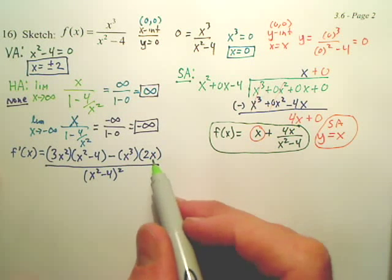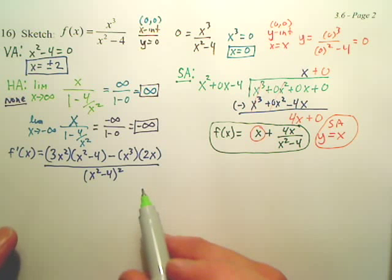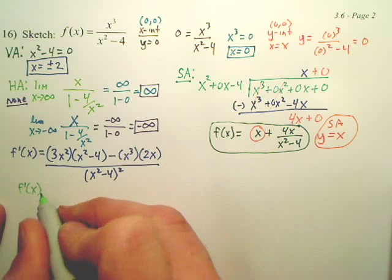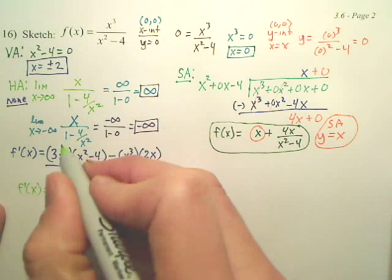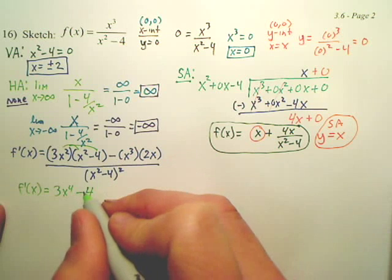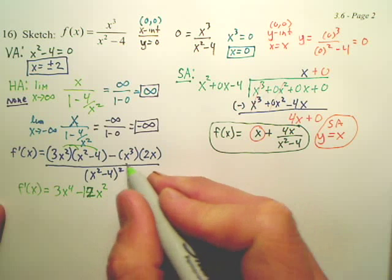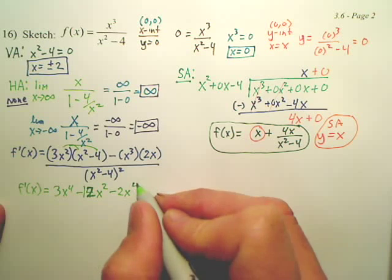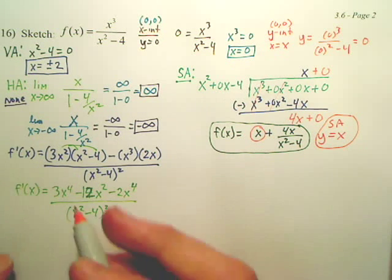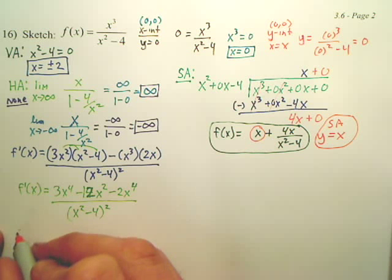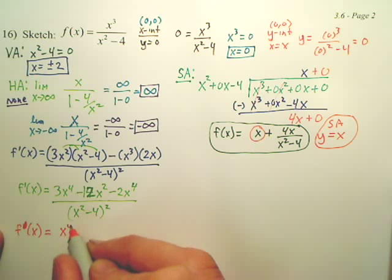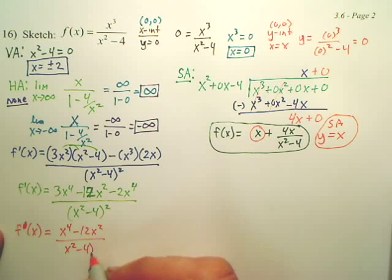All that goes over x squared minus 4 squared. Now, real quick, to make this a little bit easier, is there any GCF I can yank out? Before I distribute everything, is there a GCF I can yank out? Actually, let's just distribute it. Never mind. Probably easier. You get 3x to the fourth minus 12x squared, and this becomes minus 2x to the fourth over x squared minus 4 squared. So you now have your first derivative. It looks like it's going to be x to the fourth minus 12x squared over x squared minus 4 squared.